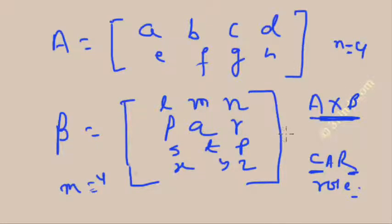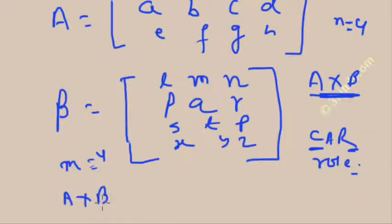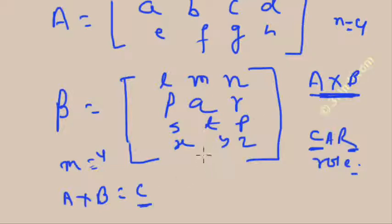So you can multiply A and B. Suppose A cross B gives a matrix which is equal to C. You can find out right here what will be the number of rows and what will be the number of columns for the matrix C.